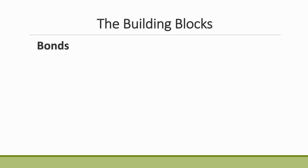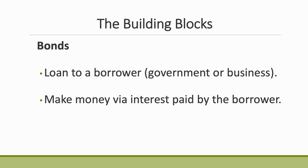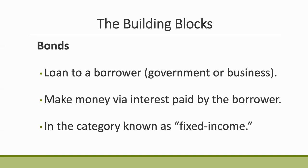The other primary asset class is bonds. A bond is just a loan that you make to a borrower. The most common types are treasury bonds, where you're loaning money to the federal government; municipal bonds, loaning to a state or local government; and corporate bonds, loaning to a business. The way you make money as a bond investor is through interest payments. Bonds fall into the category of fixed income — anything with a yield determined by a contract, including savings accounts and CDs.